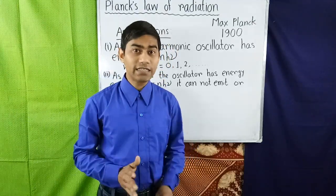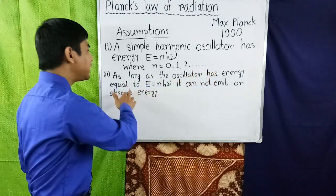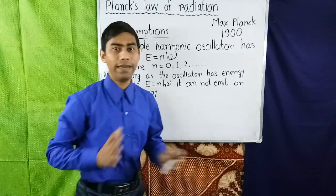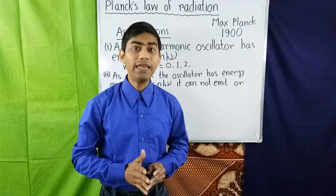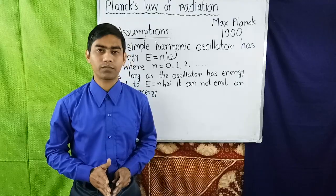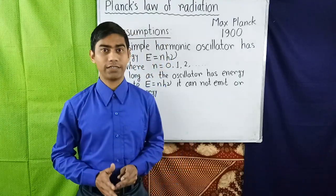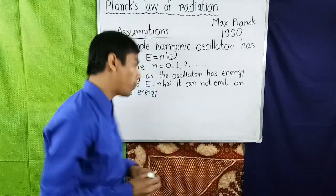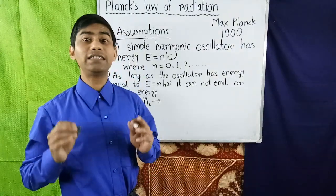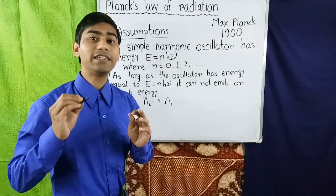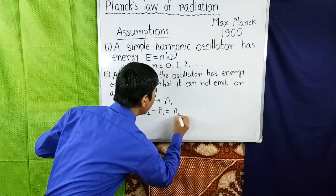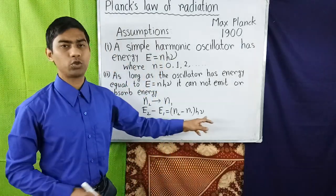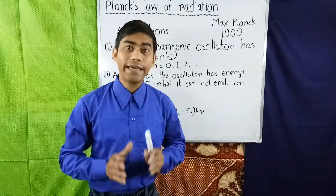The second assumption is: as long as the oscillator has energy equal to one of the allowed values given by E = n·h·ν, it cannot emit or absorb energy. Therefore the oscillator is said to be in a stationary state, or quantum state of energy. The emission or absorption of energy occurs only when the oscillator jumps from one energy state to another. If the oscillator jumps down from a higher energy state of quantum number n₂ to a lower energy state of quantum number n₁, the energy emitted is given by E₂ − E₁ = (n₂ − n₁)·h·ν. If n₂ − n₁ equals one unit, then E₂ − E₁ = h·ν.